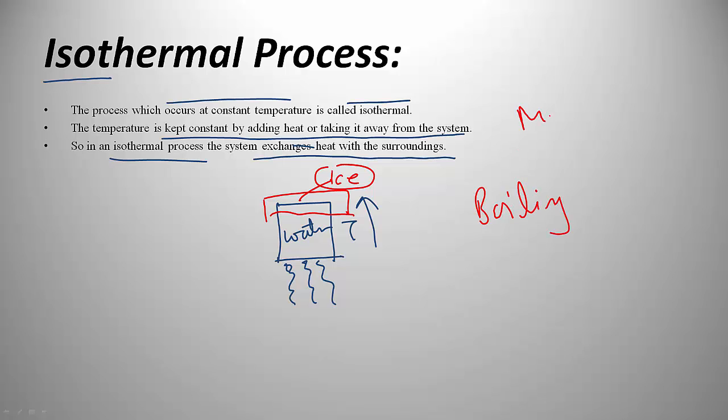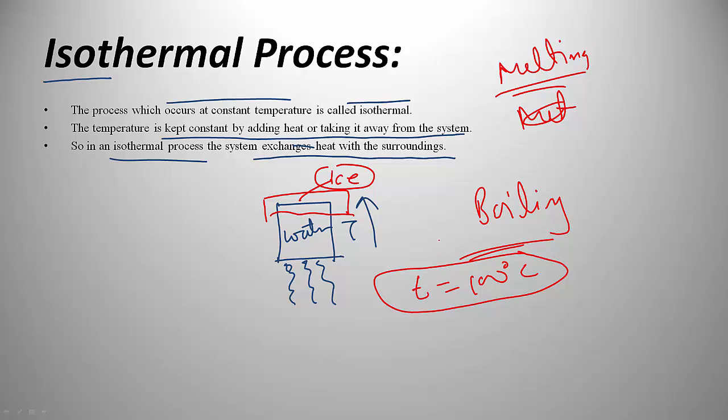During boiling or melting, heat is supplied to water, but temperature remains constant at 100 degrees Celsius. This is because the heat is being used for phase transformation. So we can say the system is isothermal—we're giving heat, but temperature stays constant.